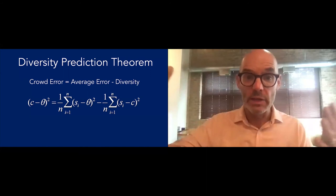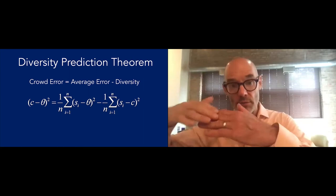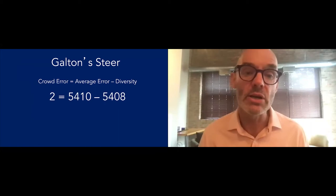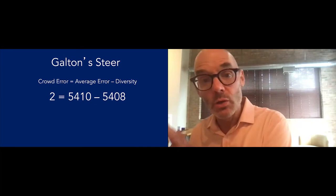The amount by which the crowd is better than its average person is exactly equal to the diversity. Logic is totally straightforward. If Tyrone's way of looking at the world makes his estimate too high, my way of looking at the world makes my estimate too low, those differences are going to cancel out, making the crowd more accurate. If we go back to the data from Galton Steer, the crowd was off by 1.4 pounds. But on average, people were off by 70 pounds. The crowd was also incredibly diverse. That's why you end up getting this wise crowd, because they're pretty smart and they're also diverse.